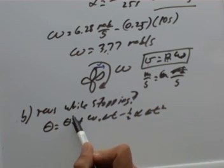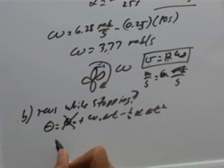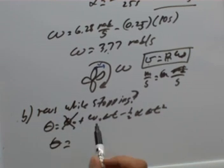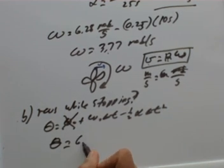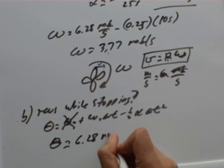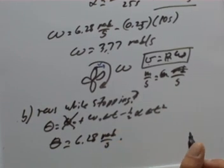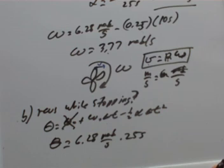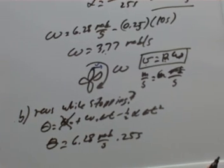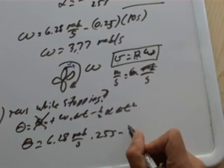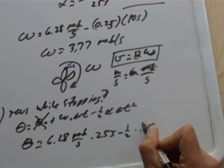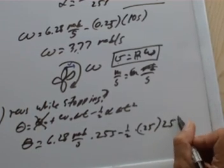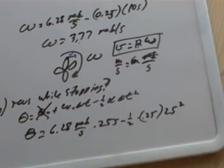So what I'll do now is assume that the fan blade started at some position of zero, and I know that it had some initial omega when it started to slow down. In particular, it was 6.28 radians per second, and the delta t is the full 25 seconds because that's what they're asking about. Then we'll have the minus one half times 0.25, that's the deceleration again, times the 25 seconds squared.